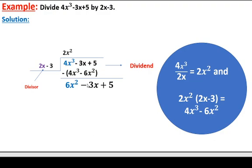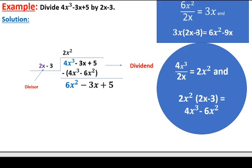The existing dividend is now 6x² minus 3x plus 5, and its leading term is 6x². Divide 6x² by 2x to get 3x — write 3x next to 2x² as the next quotient term. Multiply 3x by the divisor 2x minus 3 to get 6x² minus 9x. Subtract this from 6x² minus 3x plus 5: 6x² minus 6x² is 0, and minus 3x plus 9x gives 6x.